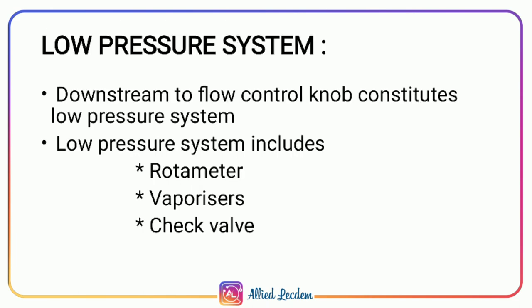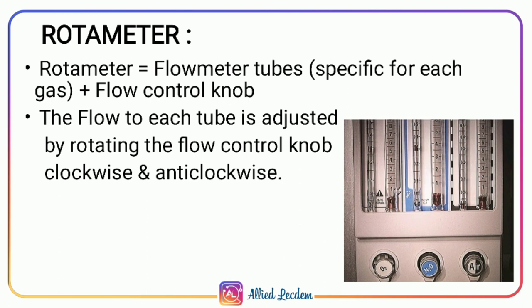The low pressure system consists of gas downstream from the flow control knob and includes the rotameter, vaporizers, and check valve. The rotameter consists of flowmeter tubes with flow control knobs, and they are specific to each gas. To increase the flow, the knob is rotated anti-clockwise; to decrease the flow, the knob is rotated clockwise.